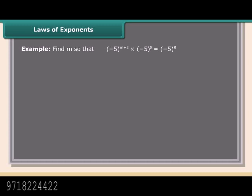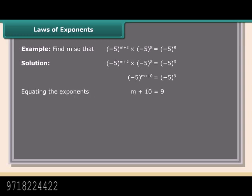Example: Find m so that minus 5 raised to the power m plus 2 into minus 5 raised to the power 8 equals minus 5 raised to the power 9. Solution: Minus 5 raised to the power m plus 2 into minus 5 raised to the power 8 equals minus 5 raised to the power 9. Minus 5 raised to the power m plus 10 equals minus 5 raised to the power 9. Equating the exponents: m plus 10 equals 9, so m equals minus 1.